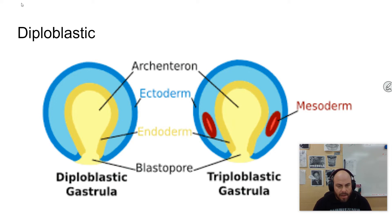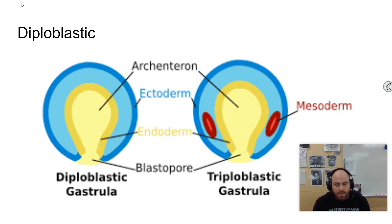All cnidarians are diploblastic, and by diploblastic what we mean is two tissue layers. They have an ectoderm, which is the outermost tissue layer, and an endoderm, which is the innermost tissue layer. You can see there the comparisons to the triploblastic organism that also has a mesoderm. During development, cnidarians just don't have that inner layer form.